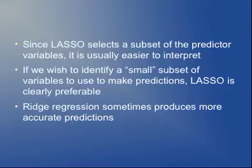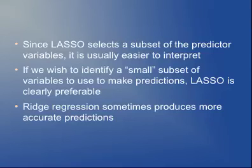Lasso selects a subset of predictor variables and is usually easier to interpret. If you want to find a small subset of variables to make predictions — for instance, in a gene expression study where you want 5 to 10 genes for clinical predictions — you would want to use lasso. If you used ridge, all 30,000 genes would have non-zero coefficients, which isn't what you want. However, there is some folklore that ridge regression tends to give more accurate predictions than lasso, so you may want to consider ridge if predictive accuracy is more important than interpretability.